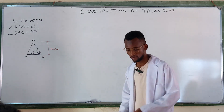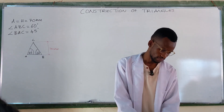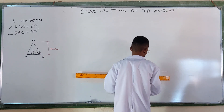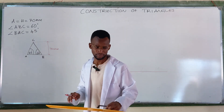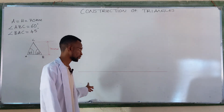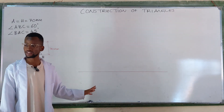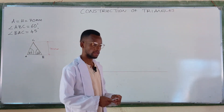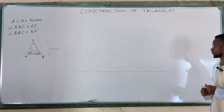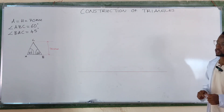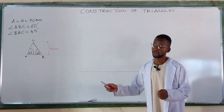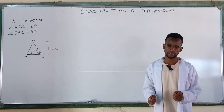We start with a faint line — a horizontal line, no specific length. And then to this line, you draw a parallel line.